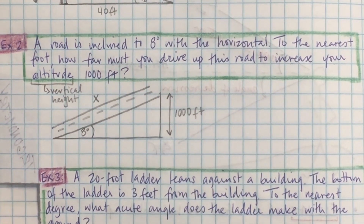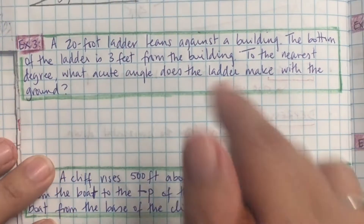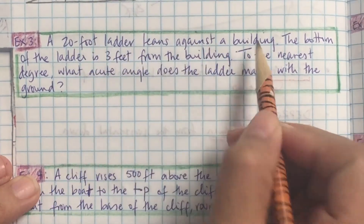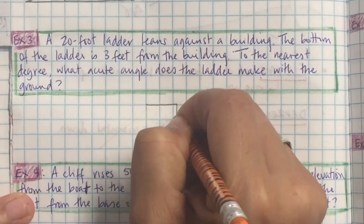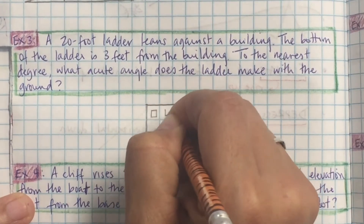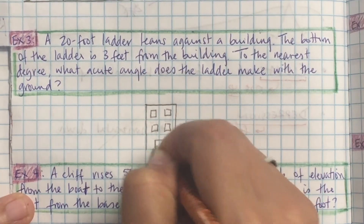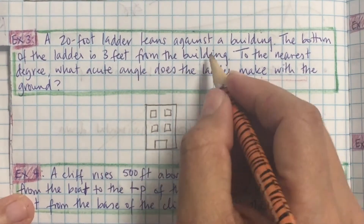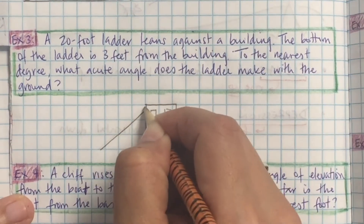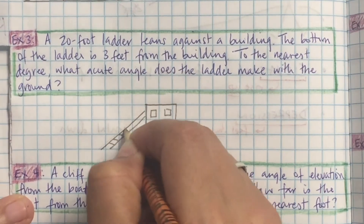If you just read each question a sentence at a time and write down what you understand, it becomes manageable. A 20-foot ladder leans against a building — so I need a building and a 20-foot ladder leaning on it. Here's my building. Listening check: underline 'acute angle' in the question. Here's a ladder leaning against my building.